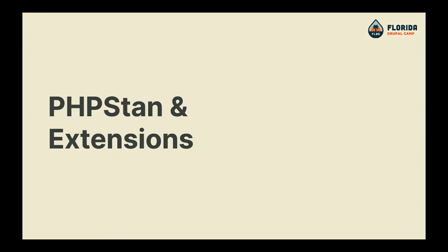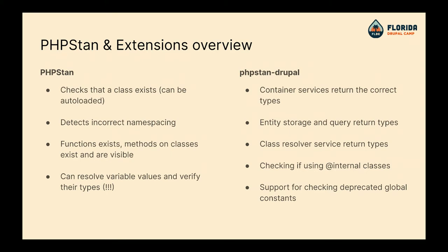Let's talk about PHPStan and its extensions. PHPStan is the main tool: it checks classes, detects incorrect namespacing — I wish I had this five years ago when Bowen and I were writing Commerce 2. We had the wrong case in a namespace, pushed to Travis, and it took three days to figure out why Travis was broken when it worked on our Macs. Case sensitivity. PHPStan solves that in one minute. There are also PHPStan deprecation rules, PHPStan PHPUnit, and PHPStan Prophecy.